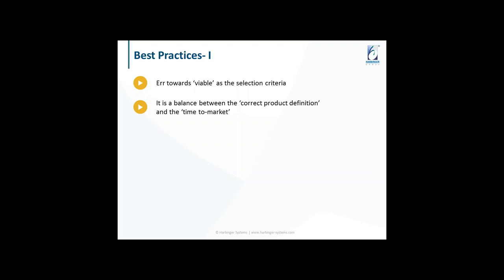Balance between correct product definition and time to market — this is a classic challenge for both the final product and the MVP. You have a deadline and need to define features. Many times it comes down to how you implement a feature, whether completely or partially. Even within that, you should maintain the correct product definition: what do you want to put in front of the user? If cutting features is hampering that, say no. Next, get a third person's feedback on whether your assumptions, launch objectives, target audience, and overall plan are holistic — because people often lose this holistic thinking as they start building and changing features.